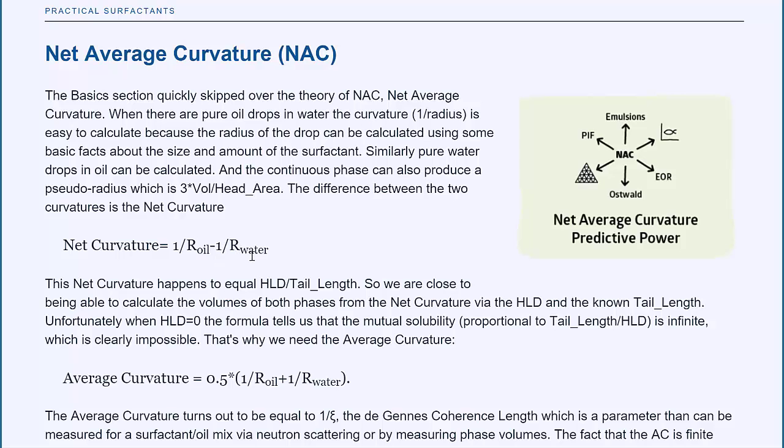So HLD is automatically related to curvature of the oil and water phase. There's another aspect called the Average Curvature, which is just the average of the two curvatures, 1 over the radius of the oil plus 1 over radius of the water times half. And the Average Curvature turns out to be equal to 1 over Xi, which is the Degen coherence length, which is well known from surfactant science.